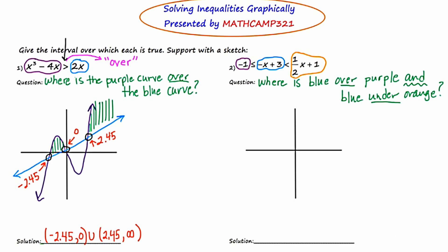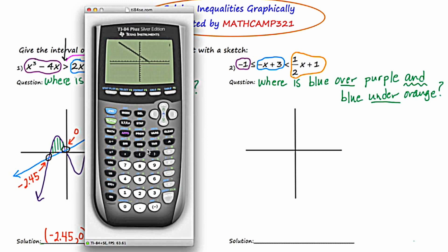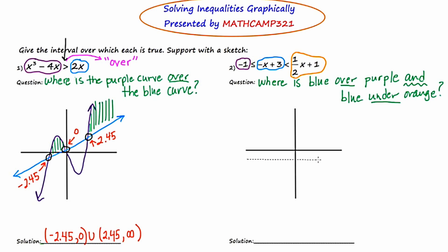Let's get our graphing calculators out and sketch this. I'll clear existing entries and start with negative one — that's the purple curve. Then the blue curve, which is negative x plus 3. Then point five x plus 1 for orange. I'm going to make y sub 2, the middle curve, the thick curve — this is the line with the negative slope. Now I'll do zoom 6. There's our horizontal line at negative one, our negatively sloped line, and our positively sloped line.